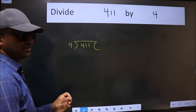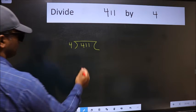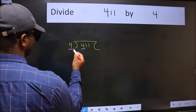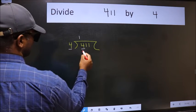This is your step 1. Next, here we have 4, here also 4. When do we get 4 in 4 table? 4 once 4.